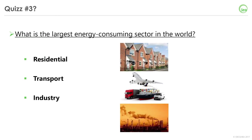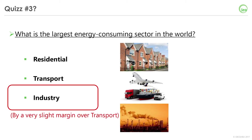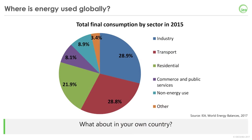One more question: which sector is the most energy consuming at the world level? The answer is industry, which is still the most energy-consuming sector in the world, but by a very slight margin over transport. As shown in the pie chart from the IEA World Energy Balances 2017, in 2015, industry accounted for 28.9% of total final consumption, followed closely by transport at 28.8%, with the residential sector completing the podium at 21.9%.